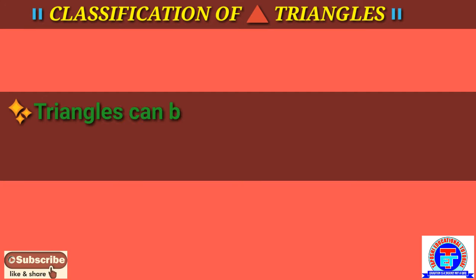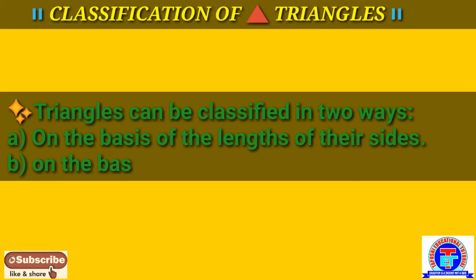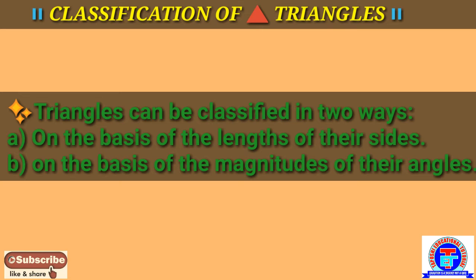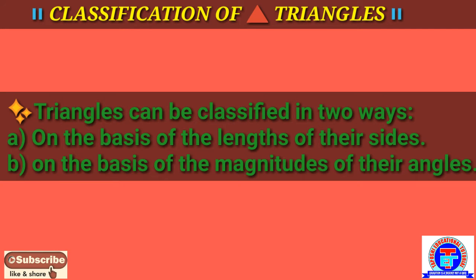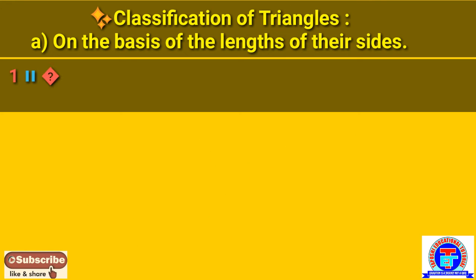Dear children, here we understand the classification of triangles. Triangles can be classified in two ways: Number A, on the basis of the length of their sides, and Number B, on the basis of the magnitudes of their angles. Now let us understand the triangle on the basis of sides.